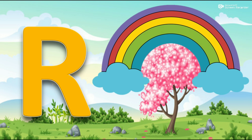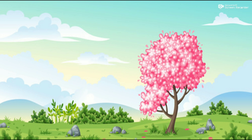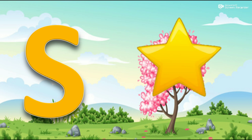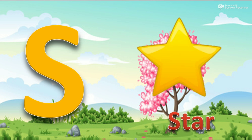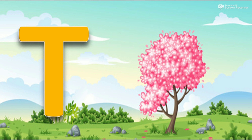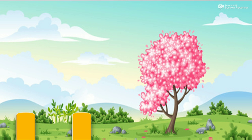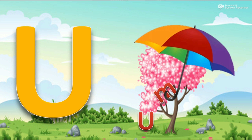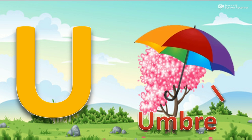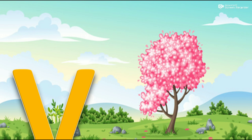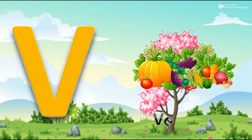R for rainbow. S for star. T for TV. U for umbrella. V for vegetables.